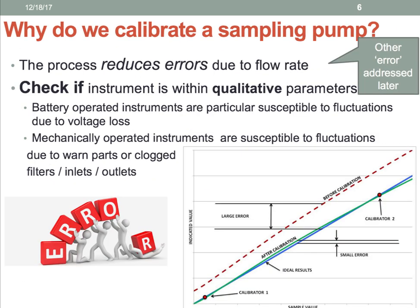So we calibrate our sampling pump to reduce errors and check if the instrument is within our qualitative parameters. We must remember that battery-operated instruments are particularly susceptible to fluctuations due to voltage loss, and our sampling pumps do try to adjust for any fluctuations within a certain range. Also, mechanical operating instruments such as our sampling pumps can have parts that become worn out — filters, inlets, or outlets which become clogged over time.